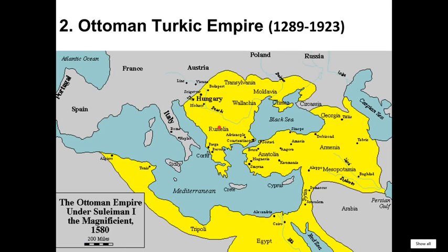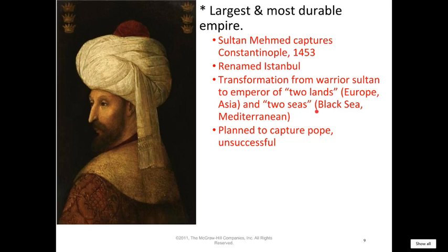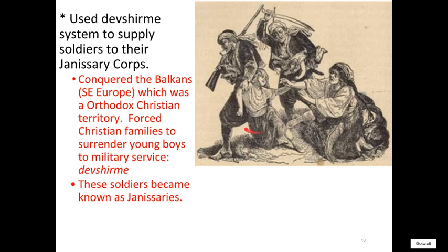This is the empire that had the monopoly on the overland trade routes between the East, the Middle East, and Europe — the empire that caused the Europeans to start exploring. Of the three, this was the longest-lasting and the strongest, though not the wealthiest — that's the Indian one. It basically starts with the collapse of the Byzantine Empire. In 1453, Constantinople gets conquered; they broke down the walls of Constantinople using cannons for the first time. Constantinople was renamed Istanbul, and Istanbul becomes the capital of the Ottoman Empire.